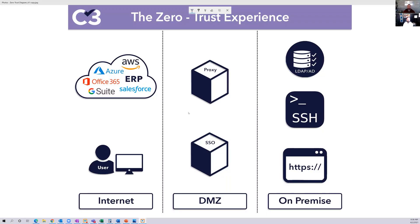Zero Trust, Software Defined Perimeter, SD-WAN — it's all part of that SASE theology or SASE model that Gartner and others are putting out there. So what you guys see here is the model for Zero Trust. But before we dive into that, let's talk about the traditional route of just using a normal VPN.